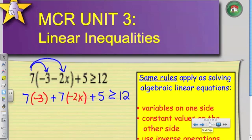Can someone tell me what is 7 times negative 3? Austin. Negative 21. Jude, what is 7 times negative 2x? Good.